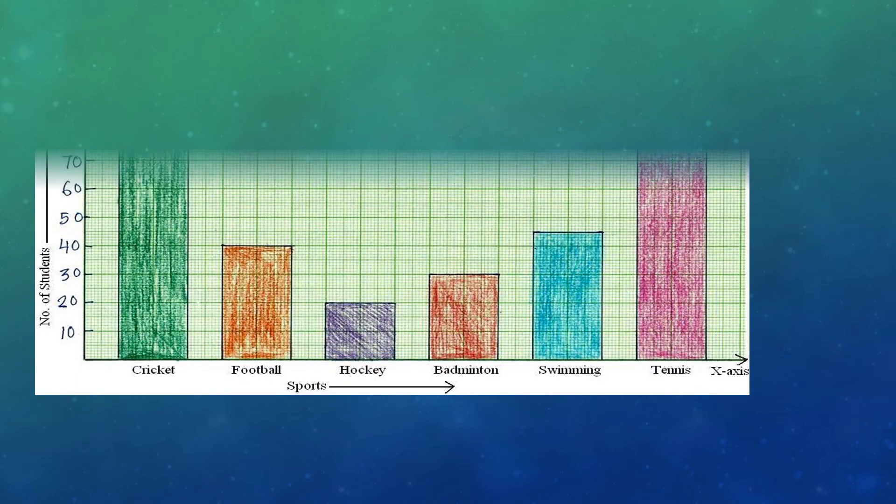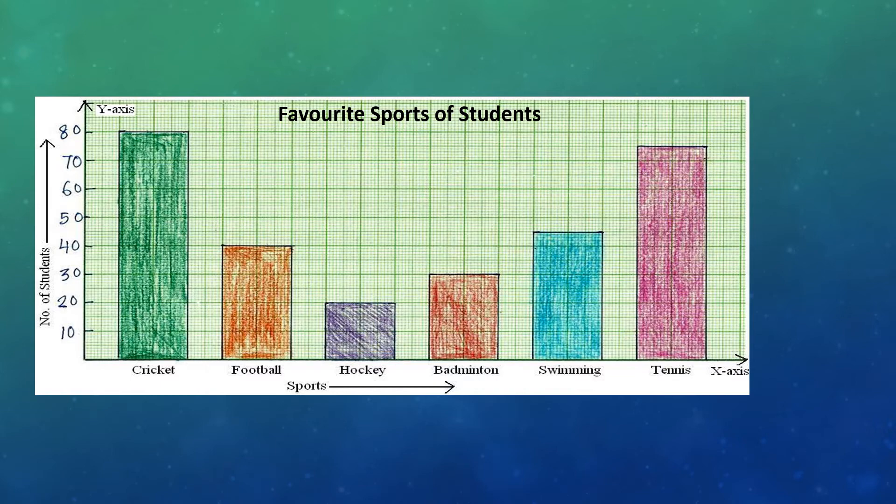To understand bar graphs better, let's do some questions. Here, we can see that the title of the graph is 'Favorite Sports of Students'. The x-axis shows sports and the y-axis shows number of students. Here, we have taken an interval of 10.